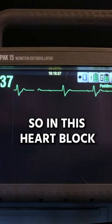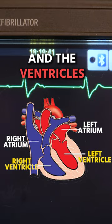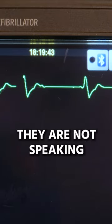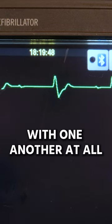So in this heart block, the P waves, meaning the atria, and the ventricles, QRS complex, they are not speaking to one another. They're not in coordination with one another at all.